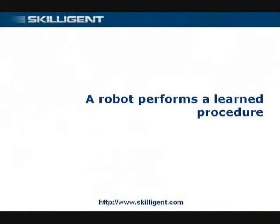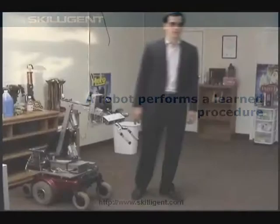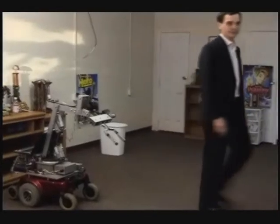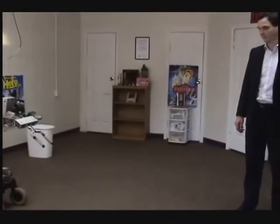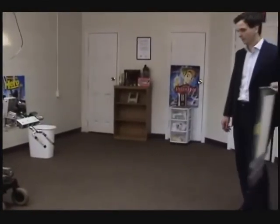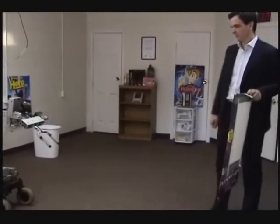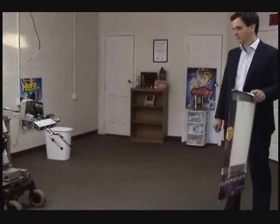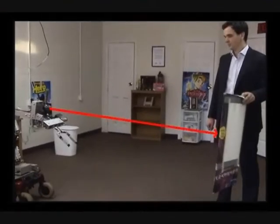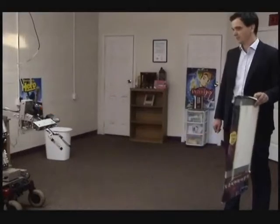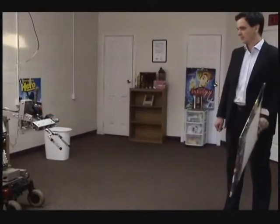One of the robot's users attracts the attention of the robot to a landmark object, the Cinderella poster. The user moves the poster back and forth in front of the robot's camera until the robot notices the poster. The robot searches its memory and discovers that the object is used in one of its already learned procedures. The robot assumes that the object is being moved by the user in order to tell the robot to execute the procedure.